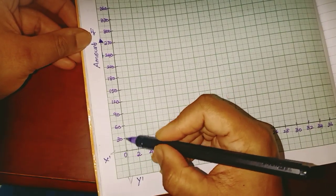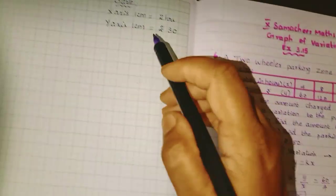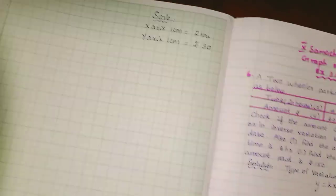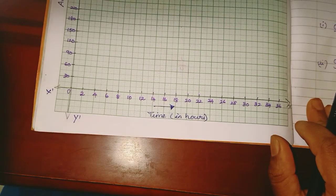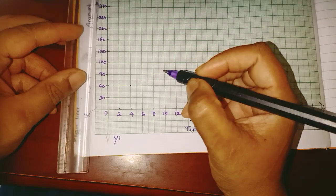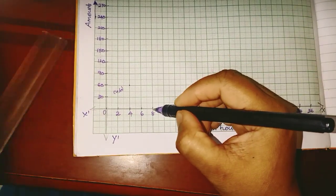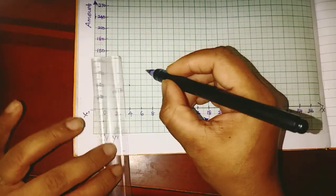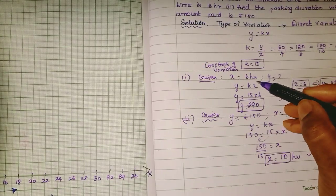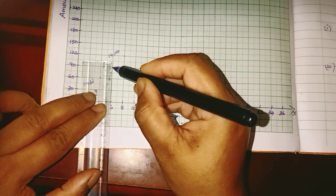Scale: X-axis 1 cm equals 2 units, Y-axis 1 cm equals 30 units. We plot the first point at (4, 60). Next point at (8, 120). Then the point for 6 hours: (6, 90).